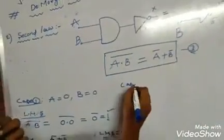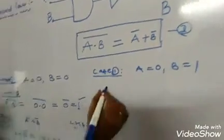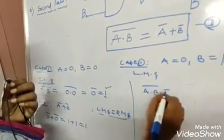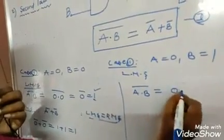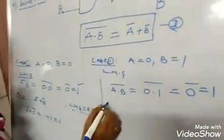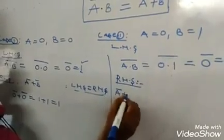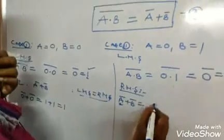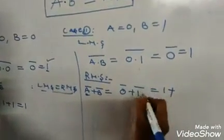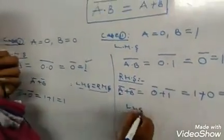Case 2: A equals 0, B equals 1. LHS: A dot B all bar = 0 into 1 = 0, and 0 bar equals 1. RHS: A bar plus B bar = 0 bar plus 1 bar = 1 plus 0 = 1. Hence proved, LHS equals RHS.